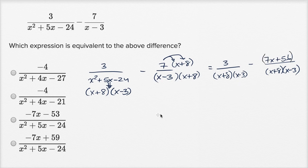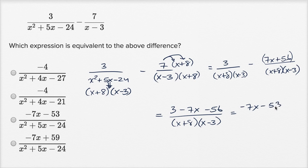And so this is going to be equal to—we have our common denominator, x plus eight times x minus three—so it's going to be three, and we can distribute this negative sign, minus seven x minus 56. So it's going to be equal to negative seven x,